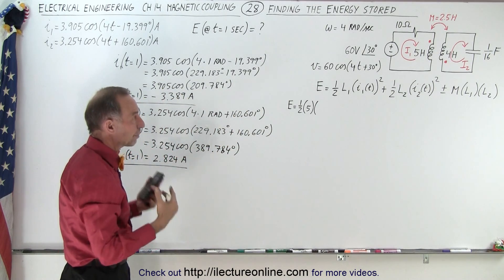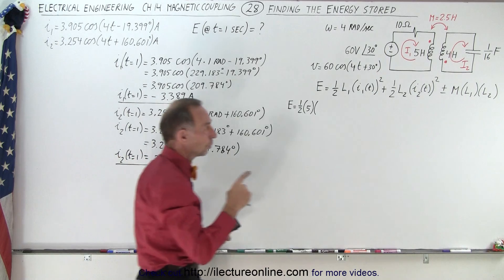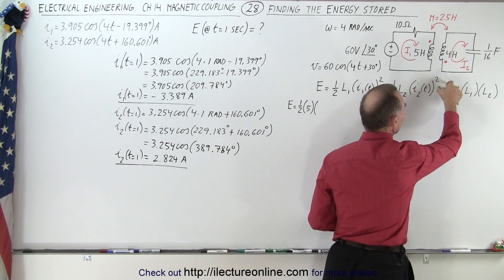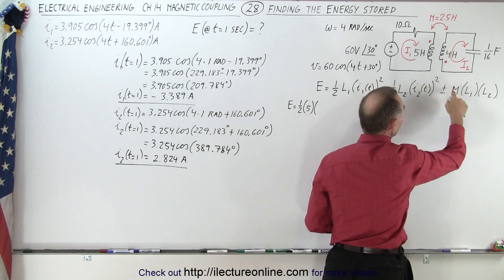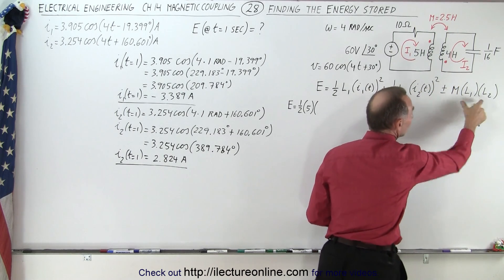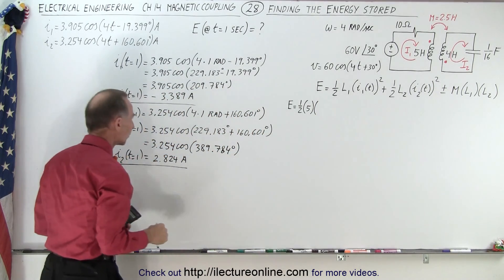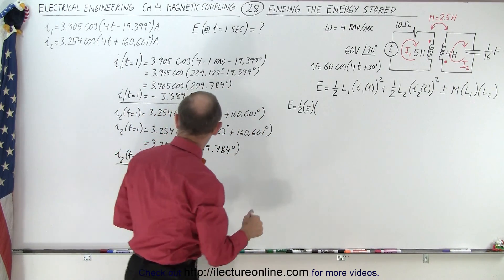Notice for the first two terms, if the current is negative or positive it doesn't make any difference—you always get a positive term. But on the third one, notice it's L1 times L2, and even though we took a positive sign because we entered current on the dot side for both inductors, if one of those is negative that term will become negative.